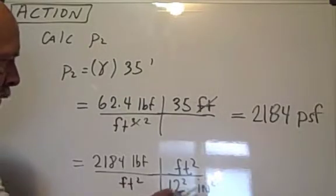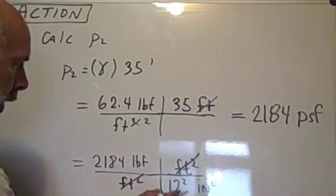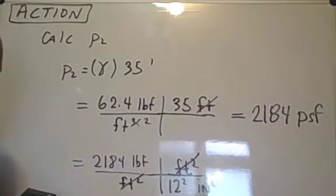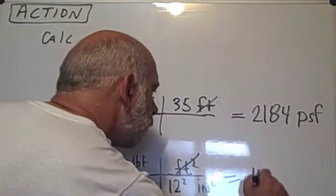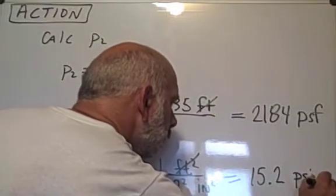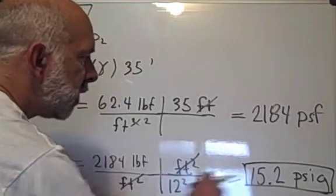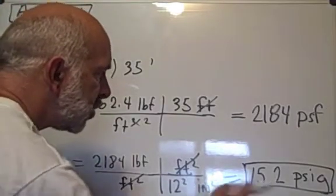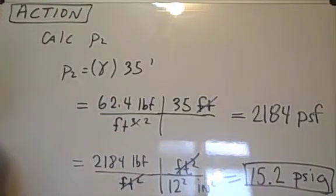If we multiply this by 12 inches per foot, square everything, cancel units, we'll get the answer in pounds force per square inch. Final answer is 15.2 pounds force per square inch. This is a gauge pressure, so we'll indicate PSIG for gauge pressure.